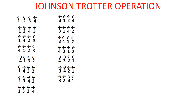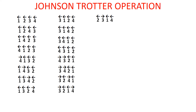Apply three steps. Three is the only mobile component; it is the largest. Exchange 3 with the adjacent digit. Step 3: 4 is greater than 3, so reverse the arrow of 4. Apply steps again — 3 and 4 are mobile components, 4 is the largest. Exchange 4 and 1. No digit greater than 4, so step 3 is skipped. We get new permutations.